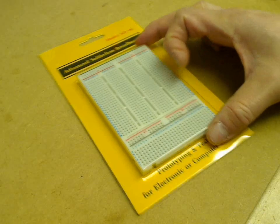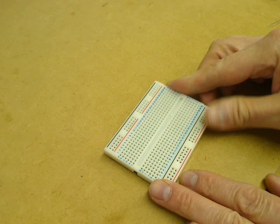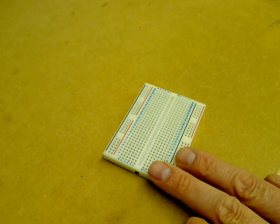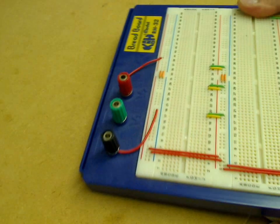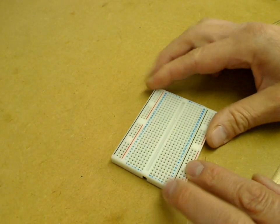Here's one out of the packet. They come in all sorts of different shapes and sizes. There's one like this, for example, which has got some big terminals on which are useful. So how do they work?